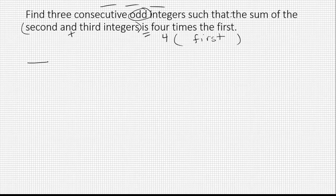Find three consecutive odd integers such that the sum of the second and third integers is four times the first. So let's write that out. We've got three missing consecutive odd integers. If we let the first one be n, what would the next odd number be? The pattern for odds is very similar to the pattern for evens. Goes up by two every time.